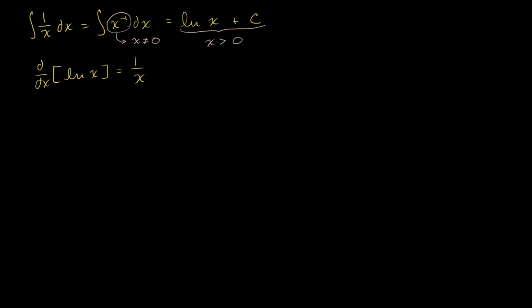So how can we rearrange this so that it's defined for negative values as well? One possibility is to think about the natural log of the absolute value of x. I'll put a question mark here because we don't really know what the derivative of this is going to be, and I'm not going to rigorously prove it here, but I will give you the conceptual understanding.